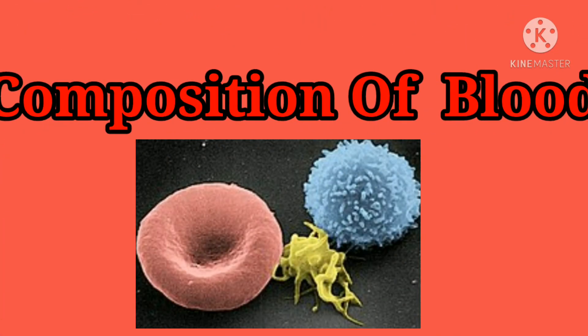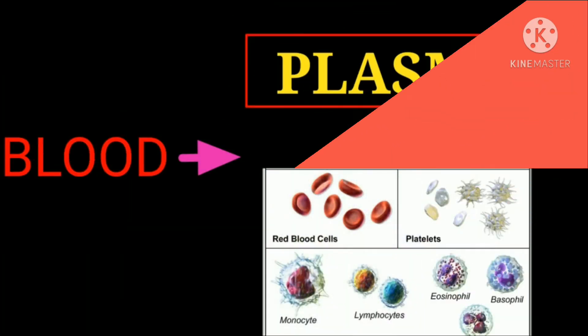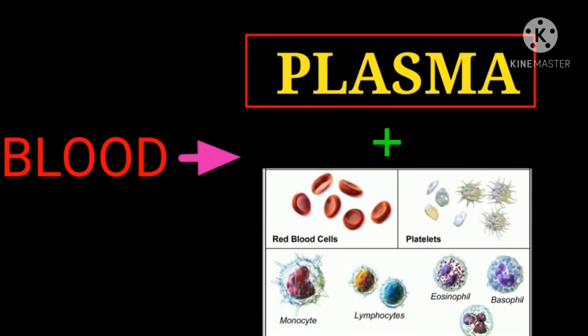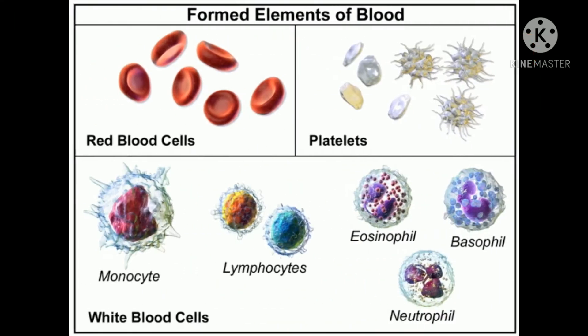Blood has four main components: plasma, red blood cells, white blood cells, and platelets.